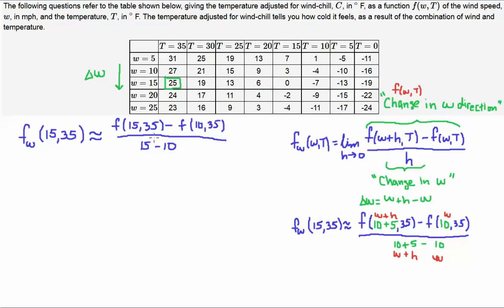Now, how did I know to do that? Well, if I want the derivative of 15,35, then let's go back to the definition. This is the w plus h term. If this were 15, then I must have, if I'm going in increments of 5, I must have added 5 to that.